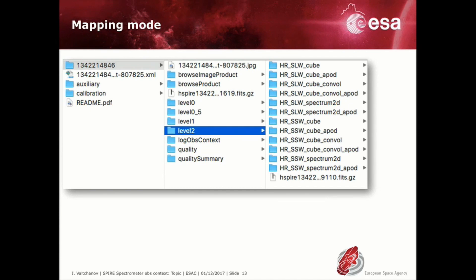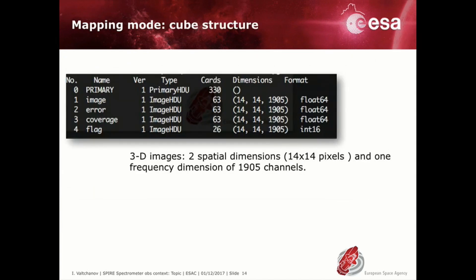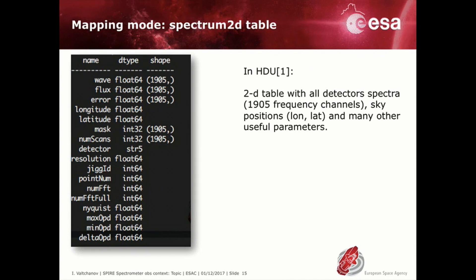Each of these subfolders contains a single multi-extension FITS file. The FITS file stores the hyperspectral cube as a 3D image together with the error cube and the coverage. The individual spectra for each jiggle and raster position are stored as a 2D table in the first FITS extension. The individual spectra can be useful when one wants to avoid averaging or convolving of spectra.